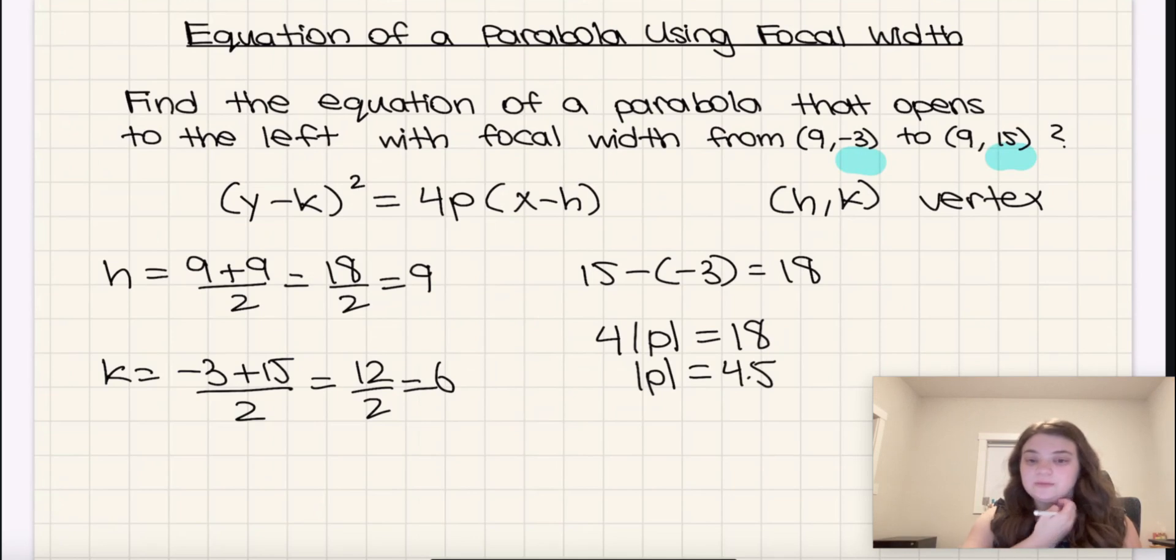Now, in this case, because it opens leftward, we only actually consider the negative value. If we just took absolute value of p equals 4.5 at face value, we'd say there's two possible answers. It could be 4.5 or negative 4.5. If it was rightward, we would only consider positive 4.5. But because it's leftward, the answer is actually just going to be negative 4.5.